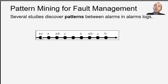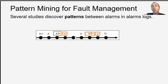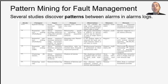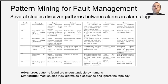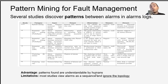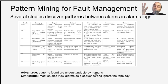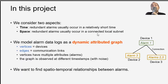Many studies about pattern mining for fault management think about the alarms as a sequence. For example: alarm AC followed by A, followed by AB, followed by C, and so on. From this they find patterns like 'AB always followed by alarm C,' which can be used to reduce the number of alarms. The key advantage is these patterns are understandable by humans. However, one limitation is that most of them ignore the topology of the network — they completely ignore the graph connecting the devices together.